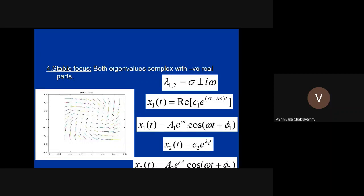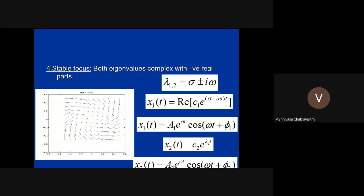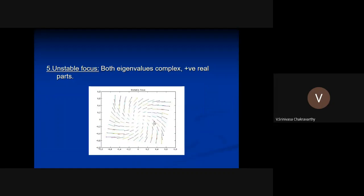Both x1 and x2 are decaying sinusoids. Plotting one against the other in 2D space produces a spiral. If σ < 0, the amplitude decays so the spiral goes inward — this is a stable focus. If σ > 0, the spiral goes outward — an unstable focus. The term 'focus' indicates that the imaginary part of the eigenvalue is non-zero.